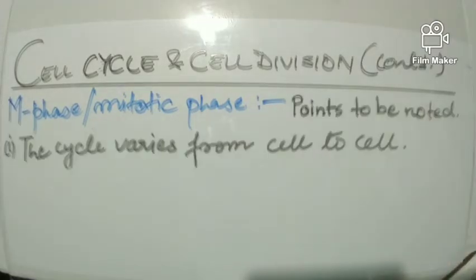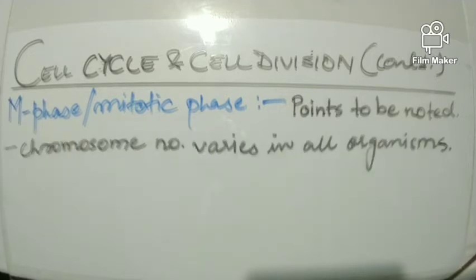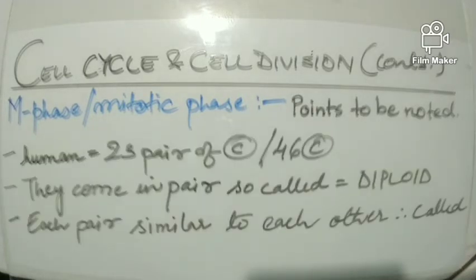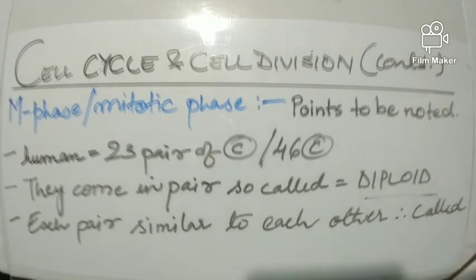There are some important points to keep in mind. The cell cycle varies from cell to cell; on average a human cell spends 24 hours to divide once. The chromosome number also varies in all organisms. We humans have 23 pairs of chromosomes, or 46 total. Since they come in pairs, they are called diploid, and each pair is similar to each other and therefore called a homologous pair.